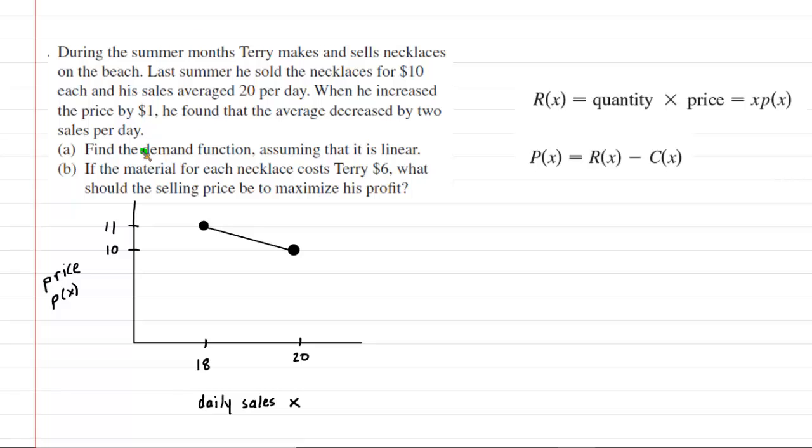In part A of the question, we have to take the given information and find the so-called demand function. The demand function is symbolized by P of X. We are told that the demand function is linear. So what we've done is taken the given information and we've converted it into graphical form.